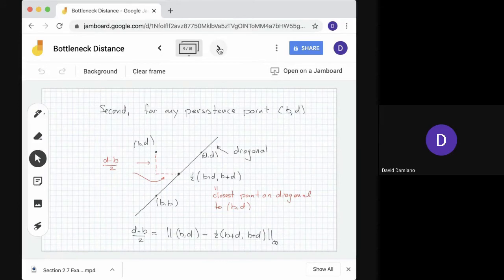Now we also have the unpaired points. So here we've got an unpaired point BD. What we want to do is use the distance between BD and the nearest point on the diagonal. So you can see from the geometry that if we take that nearest point, we get a right triangle. And the legs of the right triangle are the same. And they're both equal to D minus B over 2. So what we'll do is we'll use D minus B over 2, which is the L infinity distance between the point BD and its nearest point on the diagonal.